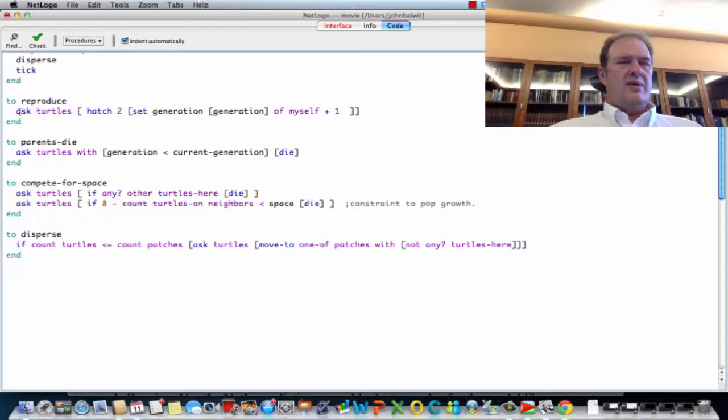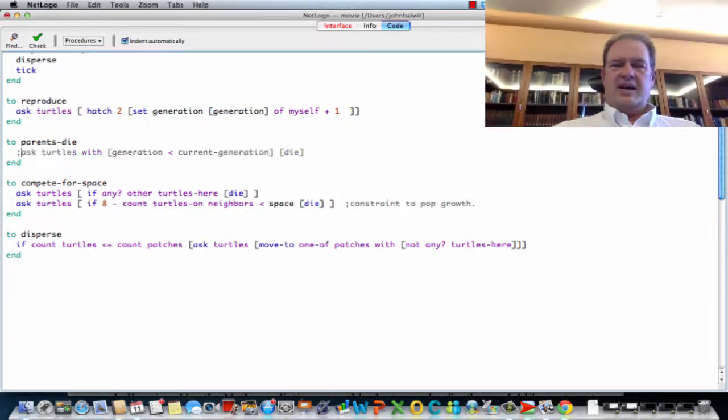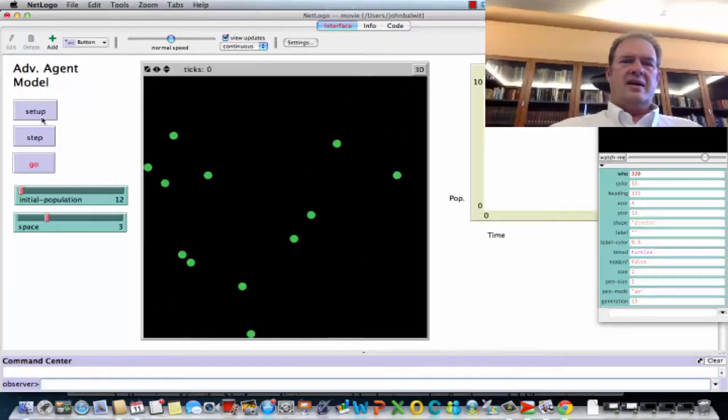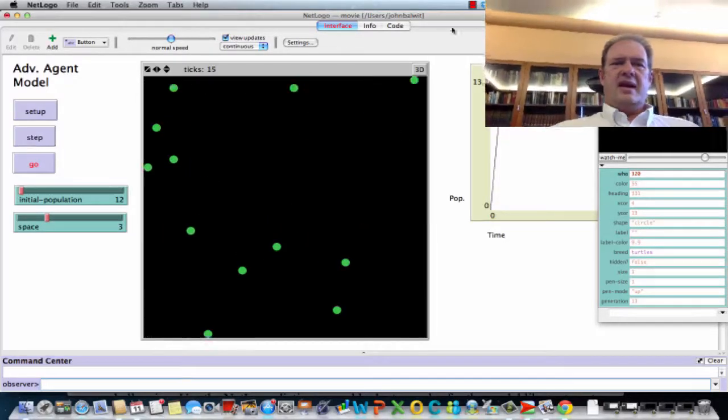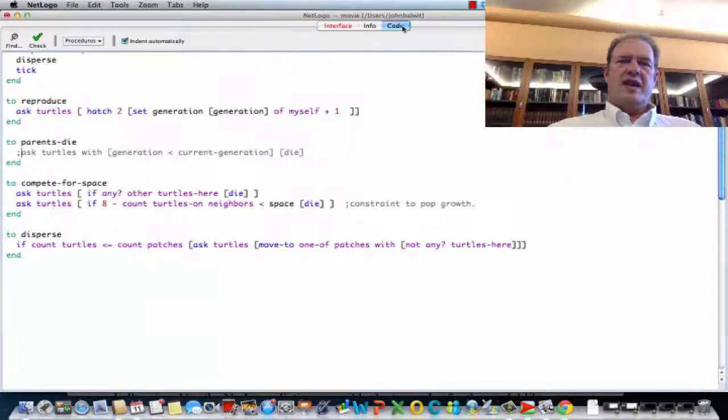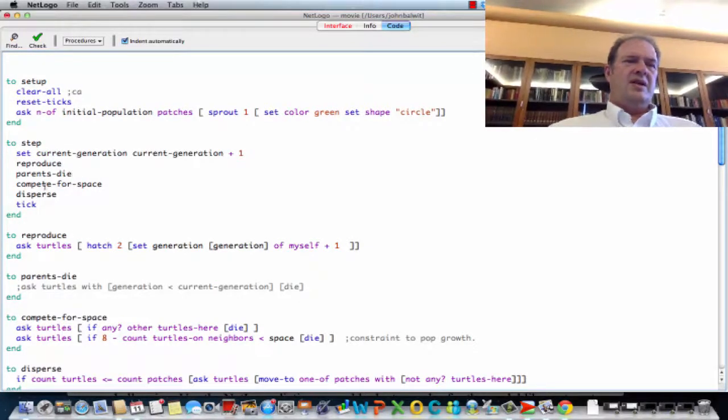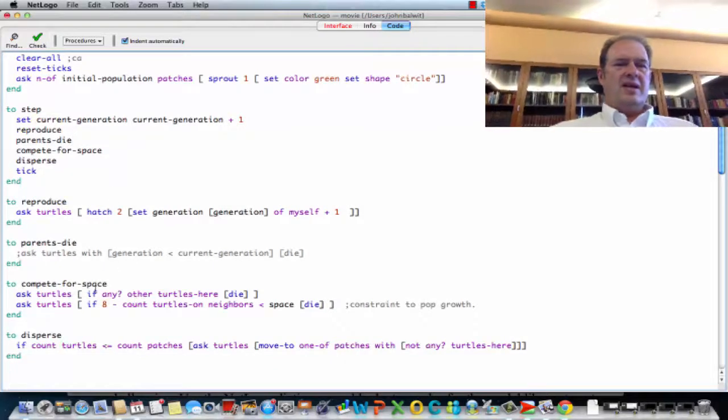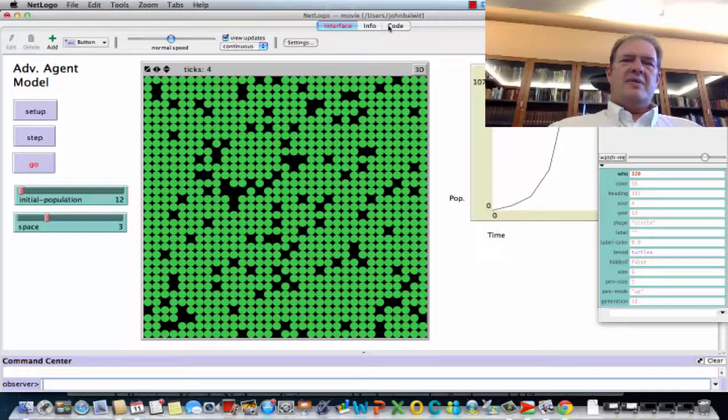There's a problem here. Reproduction is either not working or setting the generation. Parents die with generation younger than the current generation. Let's comment this out and see what happens for a second. Hmm. The death isn't happening. Because we should have exponential growth now if I turned off the death, right? So there's something happening here when we step. So the current generation, parents die as doing nothing. Compete for space. We're asking turtles. I wonder if that's the function that's causing all the problems here. Let's see. Okay. There's something about my compete for space.